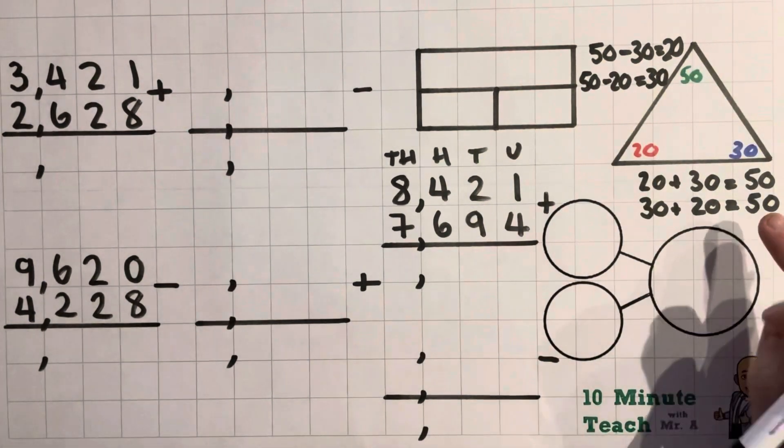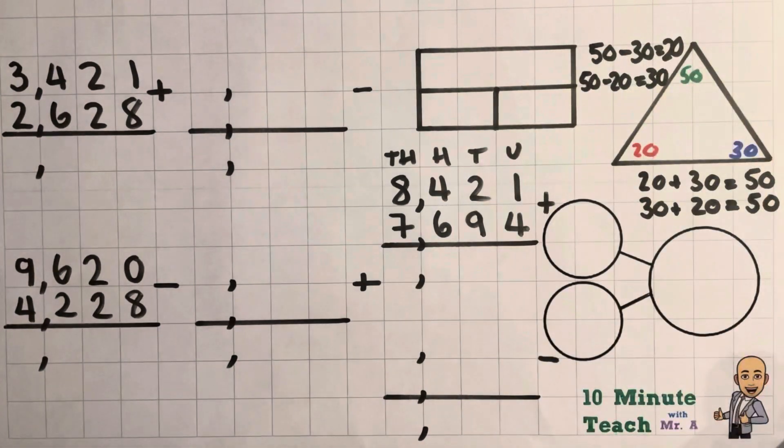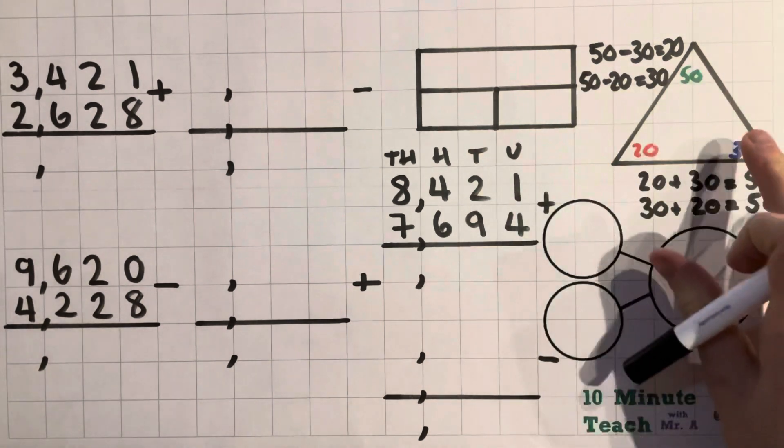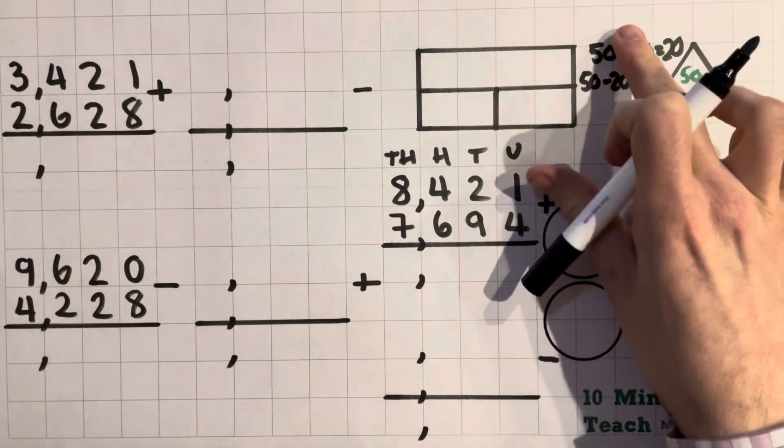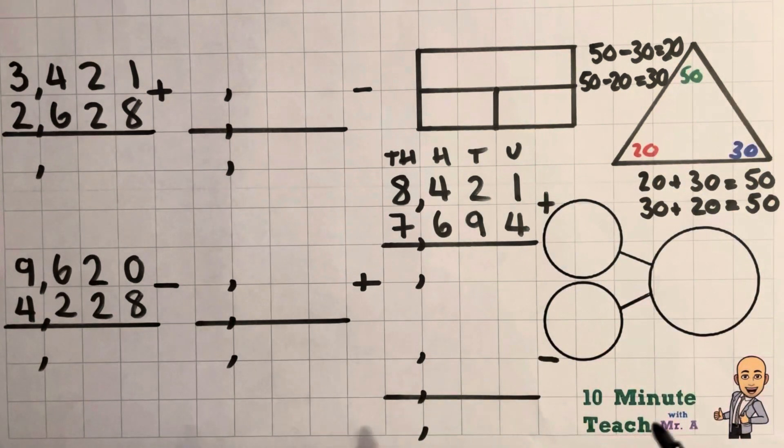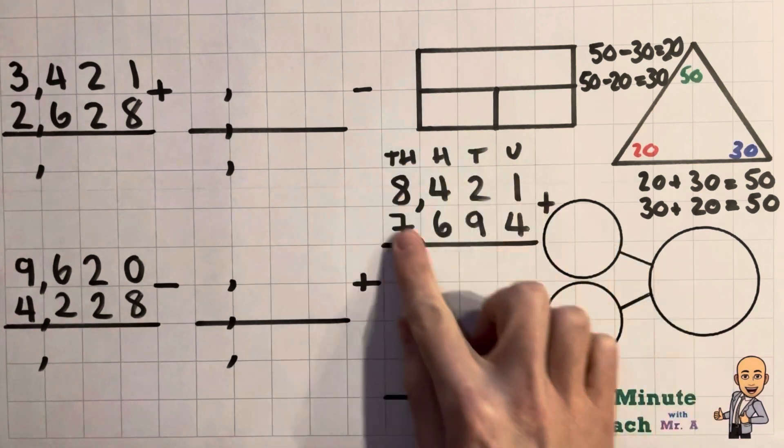So now I've got four different number sentences that relate to each other and all we've done is switched around what we've done. So we've taken our answer and then used that answer to then subtract, and you can use this method to actually check answers that you do. So let's have a little go at this one.